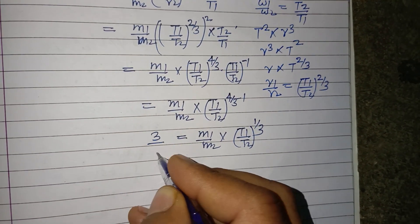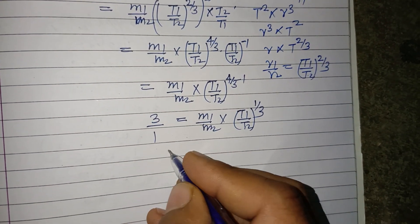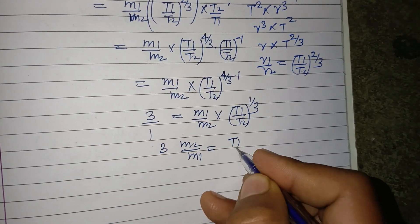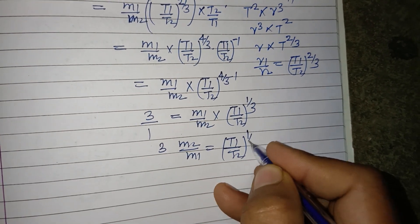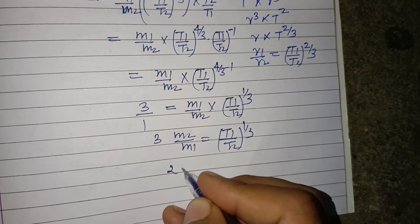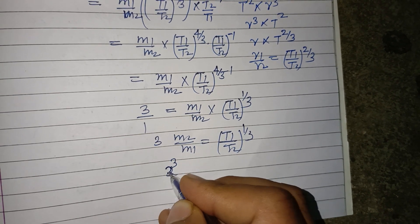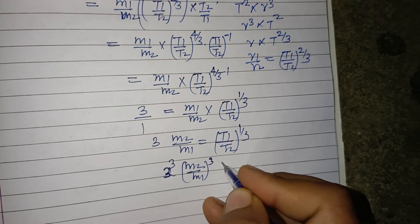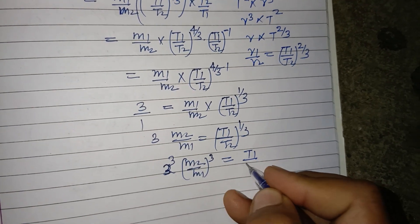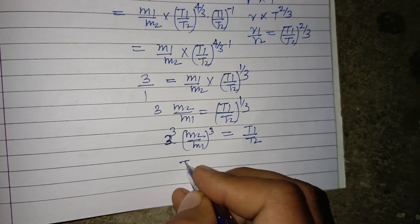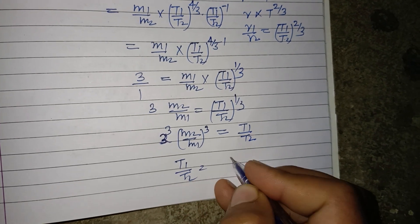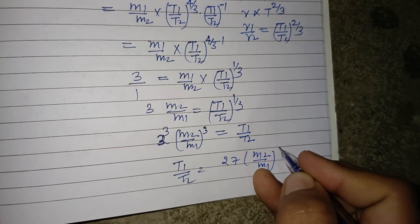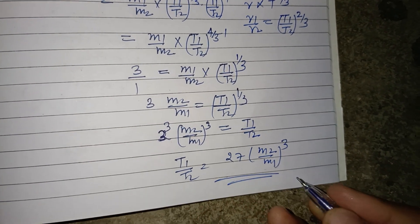And it is given to us 3 ratio 1, so 3M2 upon M1 equal to T1 upon T2 to the power 1/3. Taking cube both sides, so this becomes 3 to the power 3, M2 upon M1 whole cube equal to T1 upon T2. Therefore T1 upon T2 equal to 27M2 over M1 to the power 3. This is the correct answer.